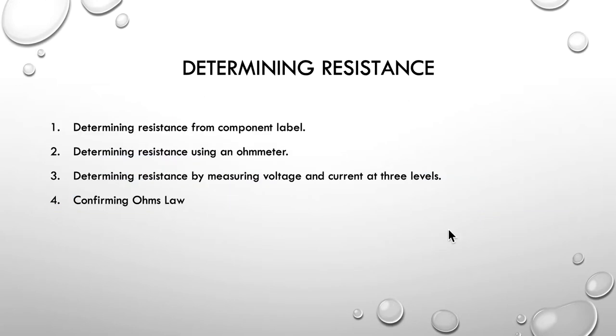The practice today is determining resistance. We're going to do that a few different ways. First, we're going to look at resistance from the component's label. Then determine resistance using an ohmmeter. Then determine resistance by measuring voltage and current at three different voltages. And then we're going to look at confirming Ohm's Law in step four.